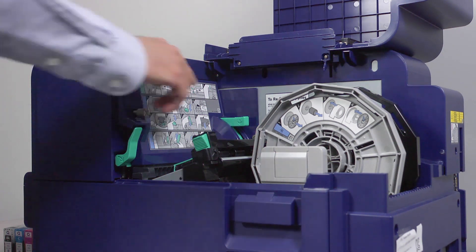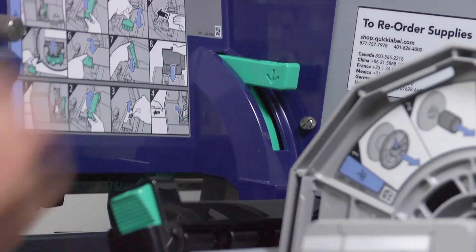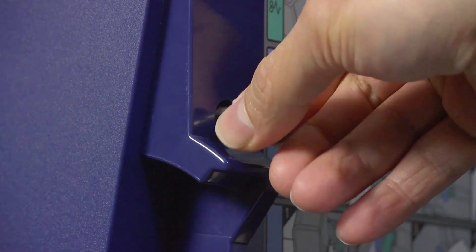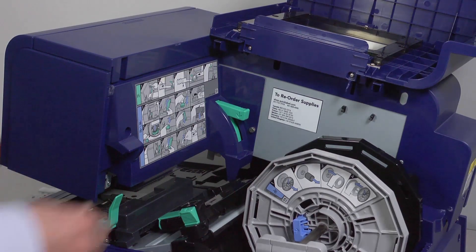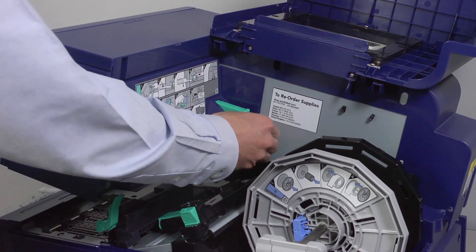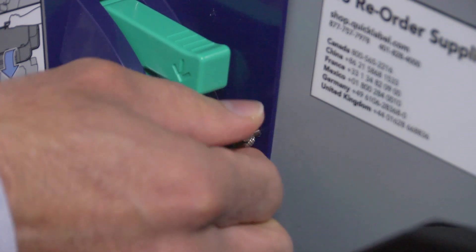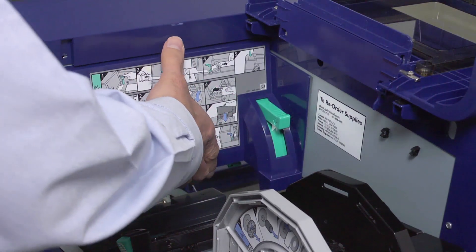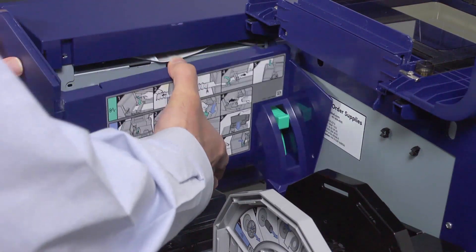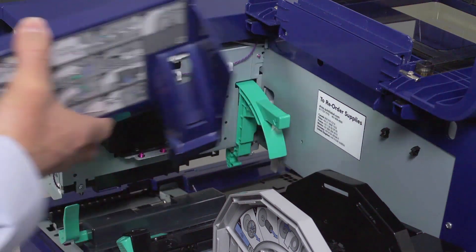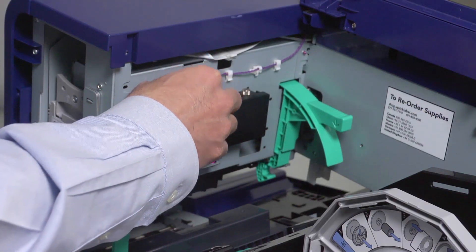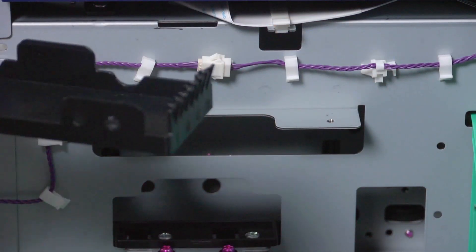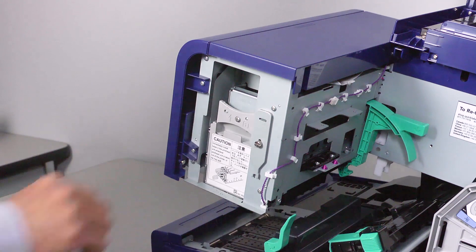Press down on the lever. Remove the two screws to take off the maintenance cover. Then lift and remove it. Remove the screws to take off the maintenance tray. Remove the print module cover.